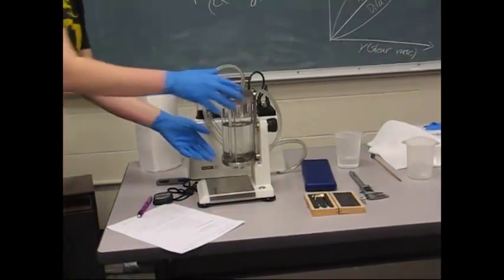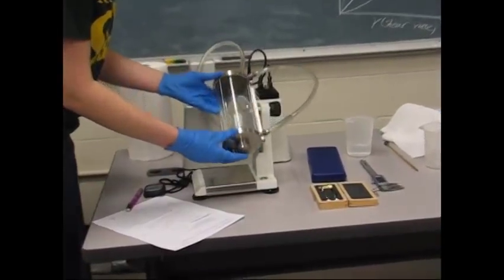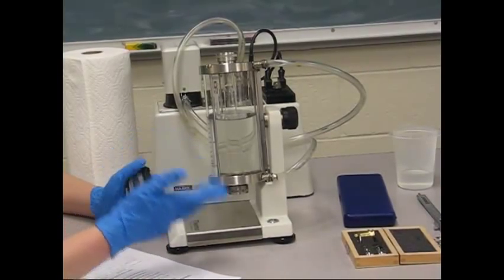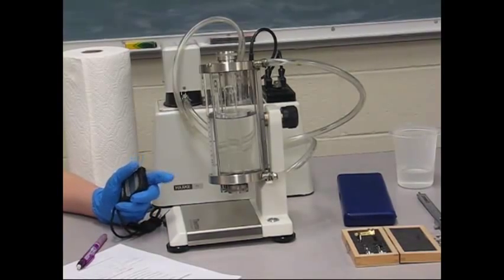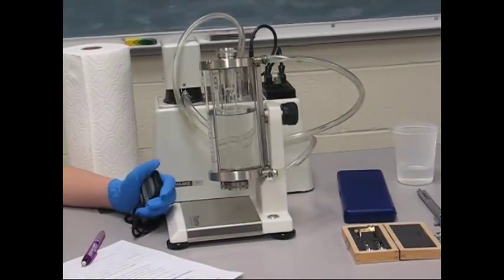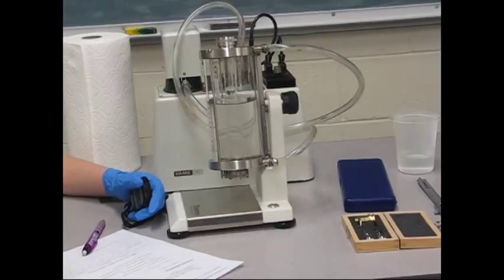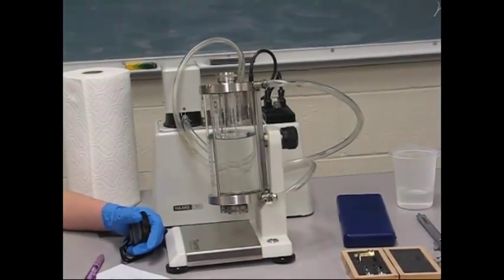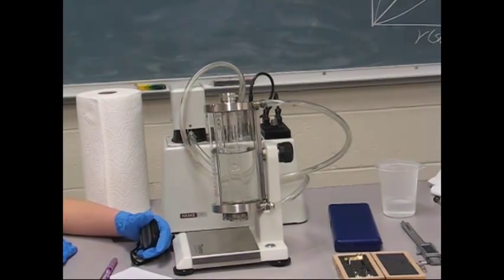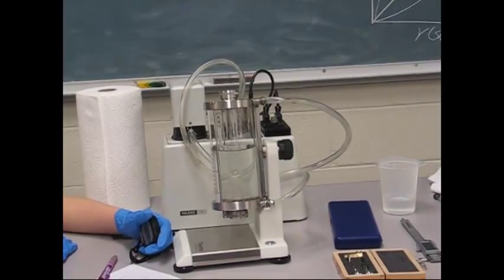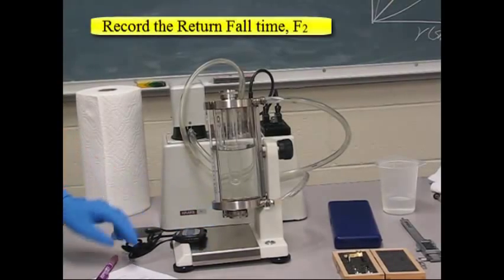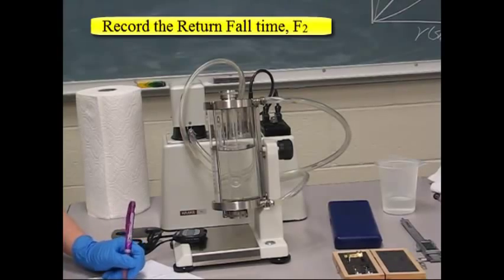Now to do the return ball, we're going to flip the ball viscometer back over and do the exact same thing. Start the timer when the ball crosses the top one and end it when the ball leaves the last line. And then we'll stop it when it crosses that line and record that value as your return fall time.